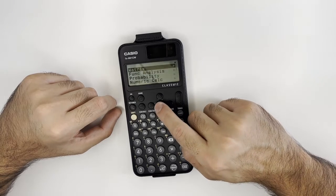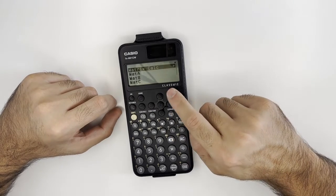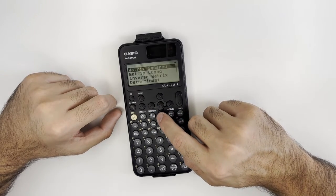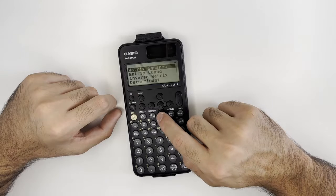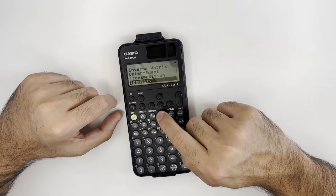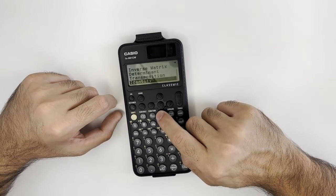You also can choose the type of calculations on the matrices. So we can do the square of the matrix, the cube of the matrix, the inverse matrix, the determinant, and transposition. We also can choose the identity option.